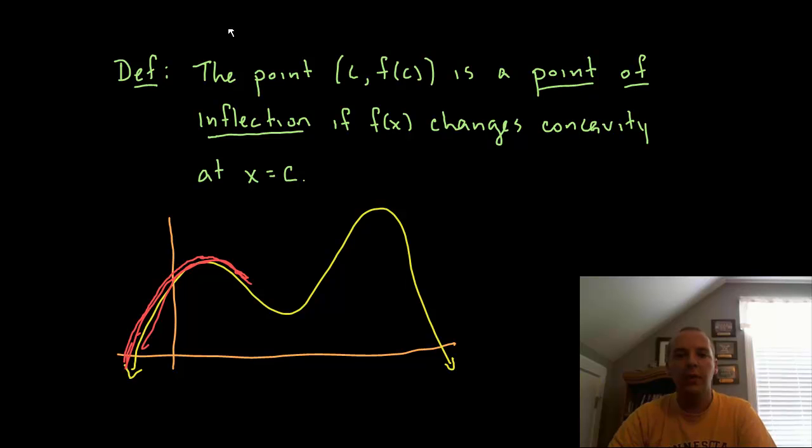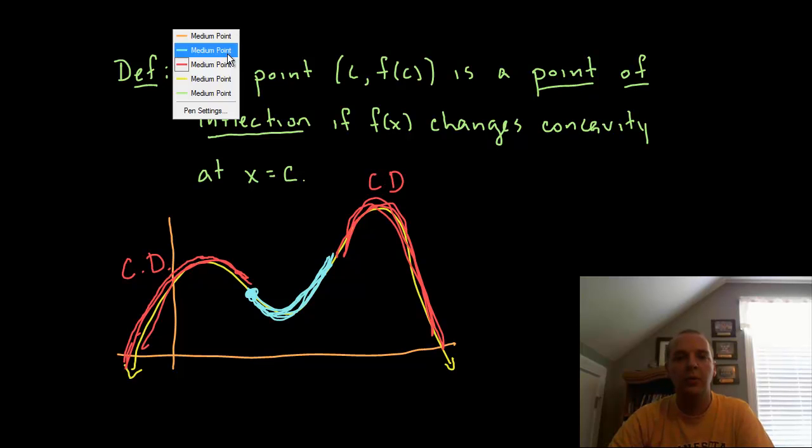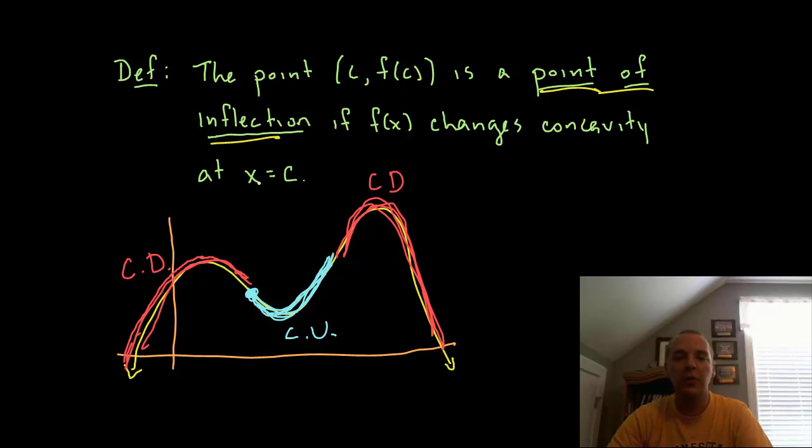Then you hit a point where it stops decreasing at a decreasing rate and starts to turn back upwards again. This would be concave down, but right about here it looks like yes the slopes are still negative but it starts to turn back upwards. This here would be called concave up. Then this last interval seems like it's concave down again forever. So concave down, concave down, and the middle portion is concave up. Can you identify where these points of inflection are? That's where it changes concavity. Right here and right here would be points of inflection.